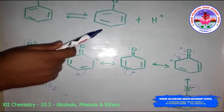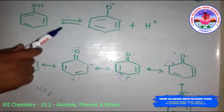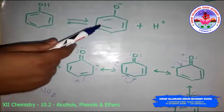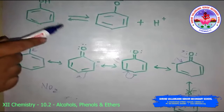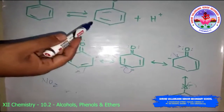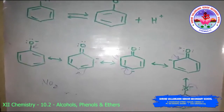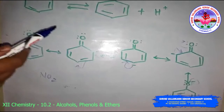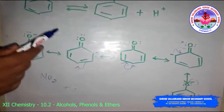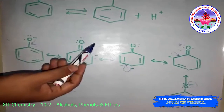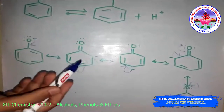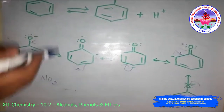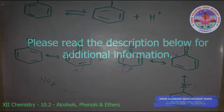Electron-releasing groups such as alkyl groups decrease the acidic strength of phenol by disfavoring phenoxide ion formation — cresol, for example, is less acidic than phenol. Referring to the pKa values table: ortho-nitrophenol has a pKa of 7.2, para-nitrophenol is 7.1, and meta-nitrophenol is 8.3. This concludes the discussion on acidity, leading into esterification reactions.